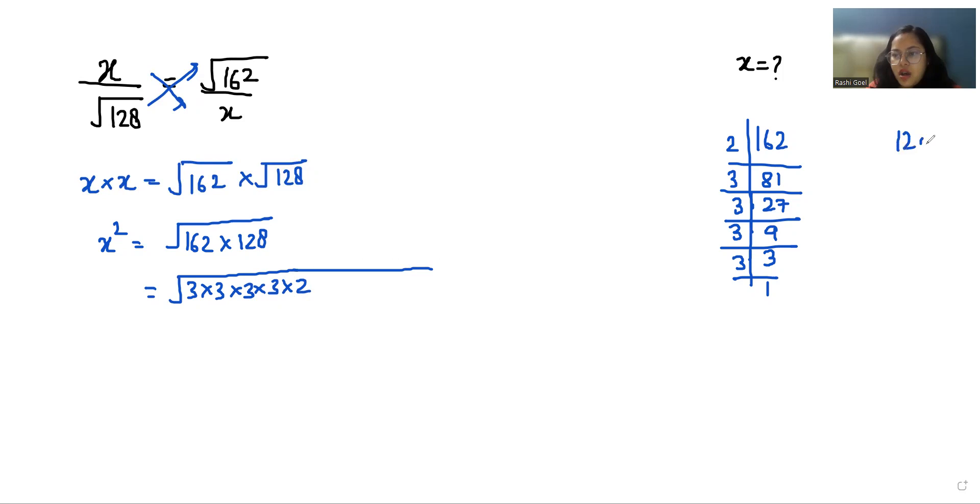Now 128, I am going to divide with 2, 64, again with 2, 32, again with 2, 16, 2, 8, 2, 2 and 2, 1. That's 7 times 2.